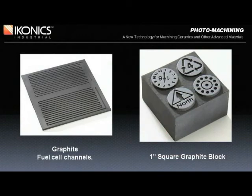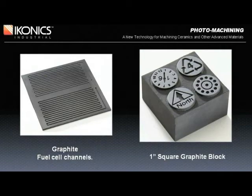Graphite is another material well-suited for photo machining. Whether for fuel cells or EDM applications, graphite will machine quickly and with the precision of a photolithography process. Note again the multiple patterns in the 1-inch square graphite block on the right, machined simultaneously with photo machining.